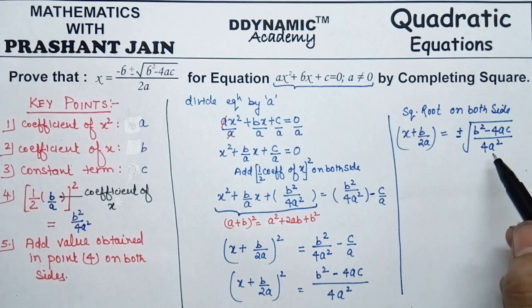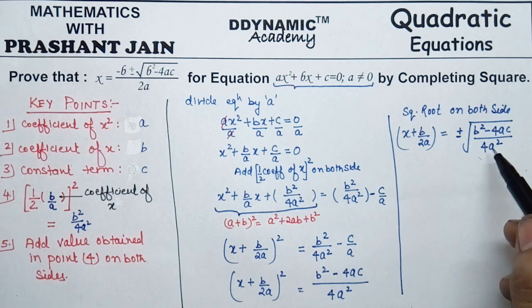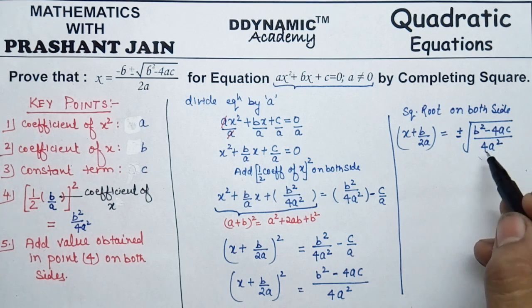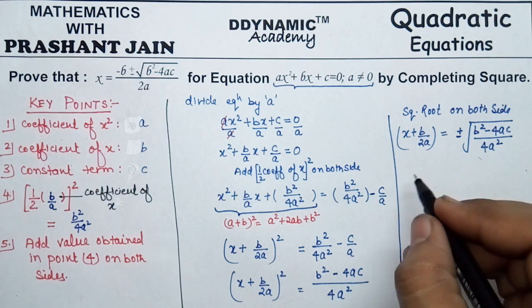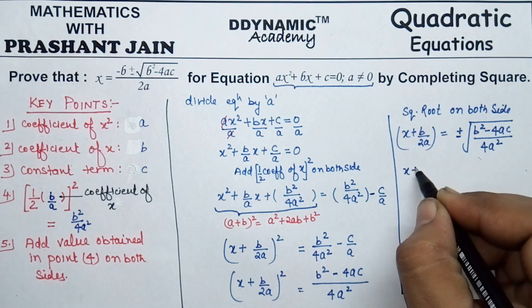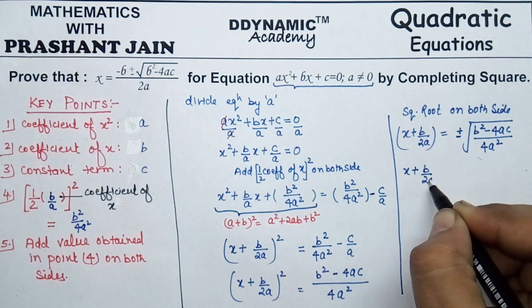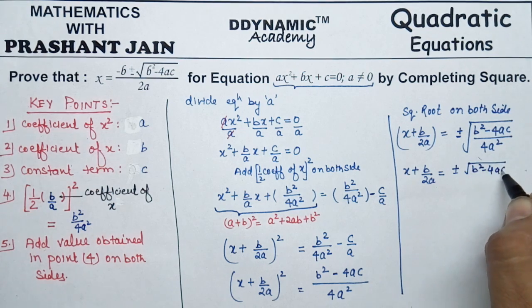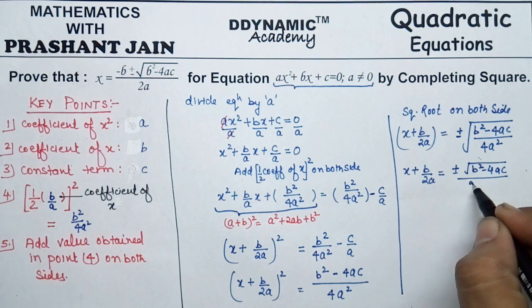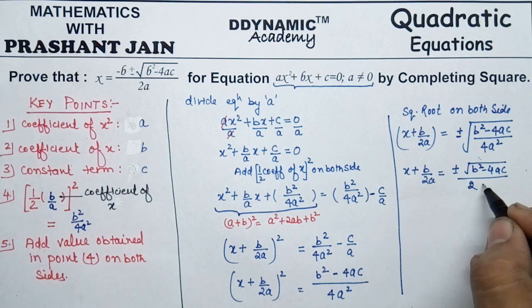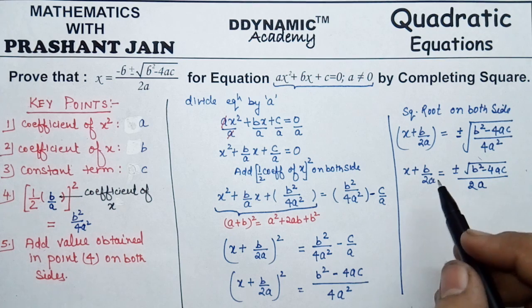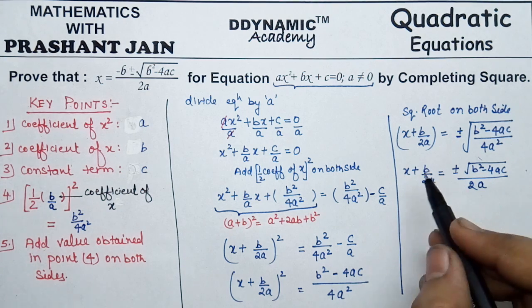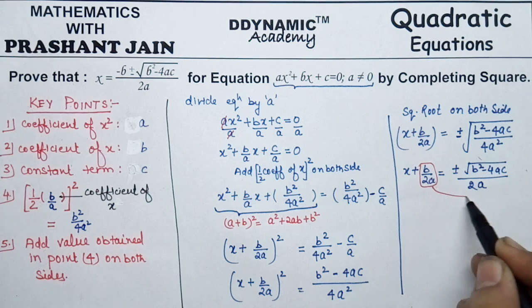Since we know that √(4a²) = 2a, we can simplify. The square root of 4 is 2 and the square root of a² is a. So x + b/(2a) = ±√(b² − 4ac) / (2a). Now we shift b/(2a) from the left-hand side to the right-hand side.